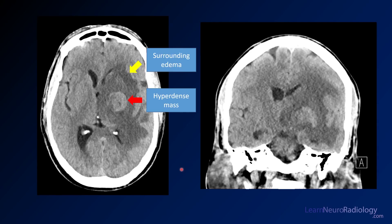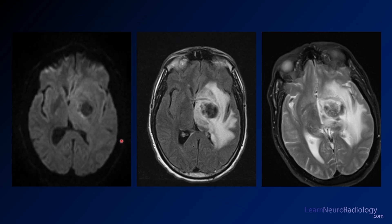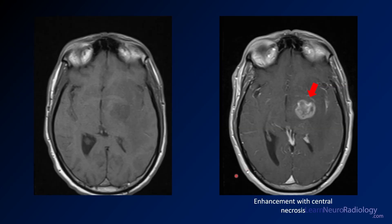Here we have the CT. You see this hyperdense mass in the left basal ganglia — that's a nice characteristic that should help you think about lymphoma. You've got a bunch of surrounding edema in the basal ganglia, extending into both the temporal lobes and the adjacent frontal lobes. On the MR, it's a little bit dark on diffusion — maybe there are some blood products there. Pretty dark on T2 and FLAIR, but you've got a ton of edema surrounding this lesion of the basal ganglia.